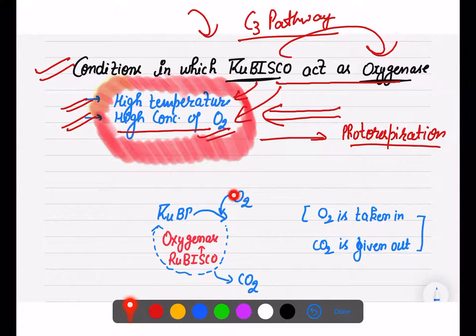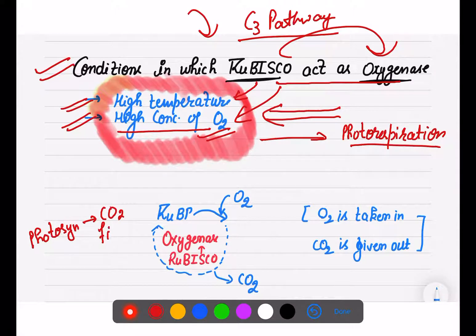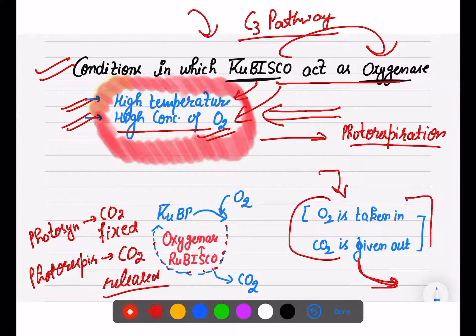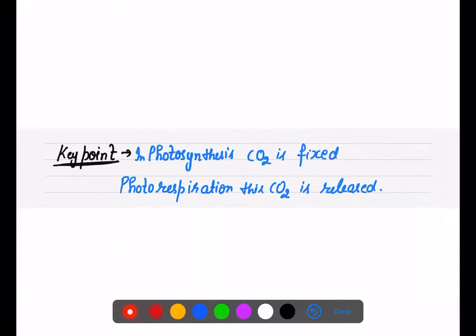In photorespiration, oxygen is taken in, it joins with RuBP, and RuBisCO acts as oxygenase, and CO2 is released. We know that in photosynthesis CO2 gets fixed, but in photorespiration that same CO2 is now released. Just like in respiration — oxygen is taken in and carbon dioxide is given out. The products are the same, but this process takes place in the presence of light.